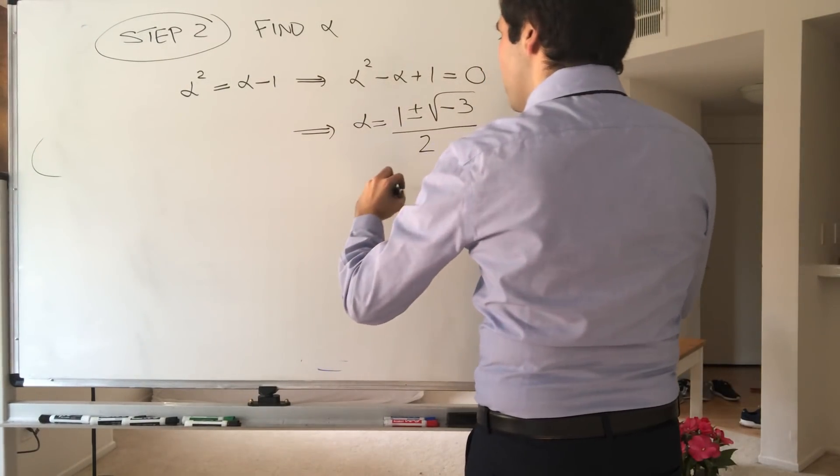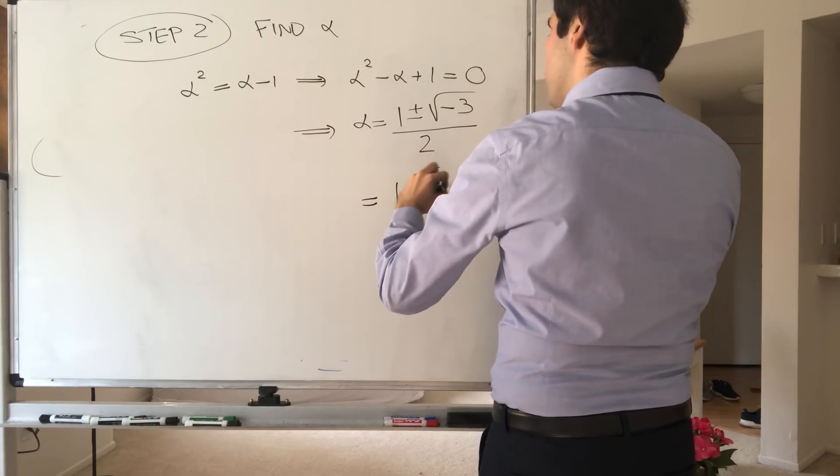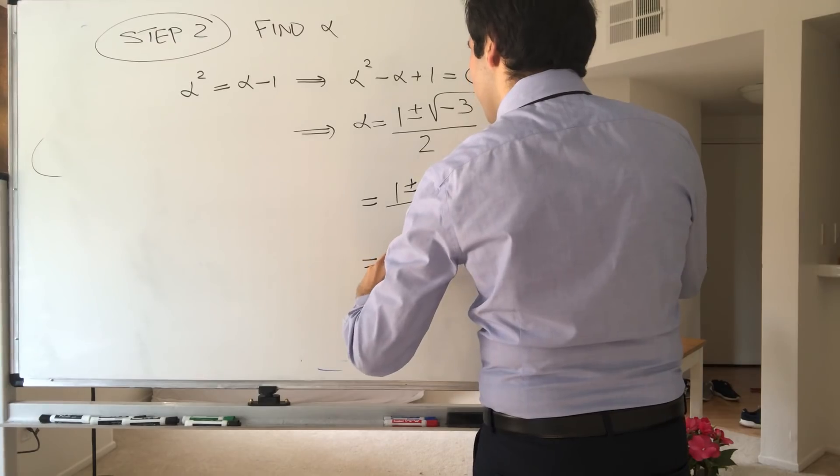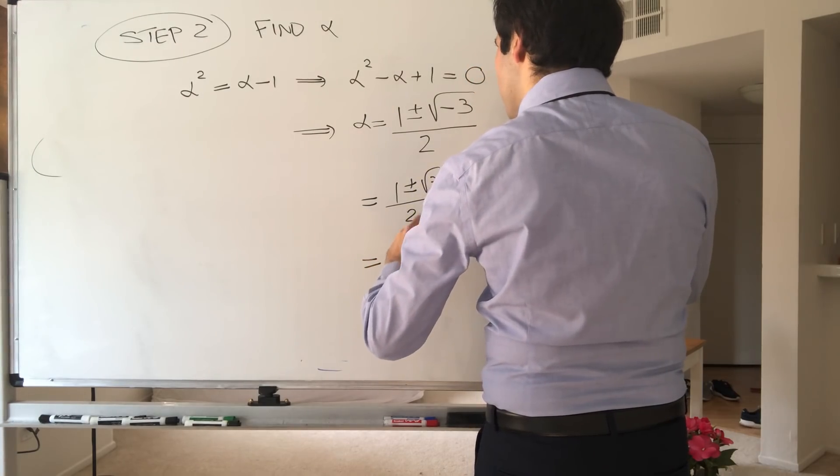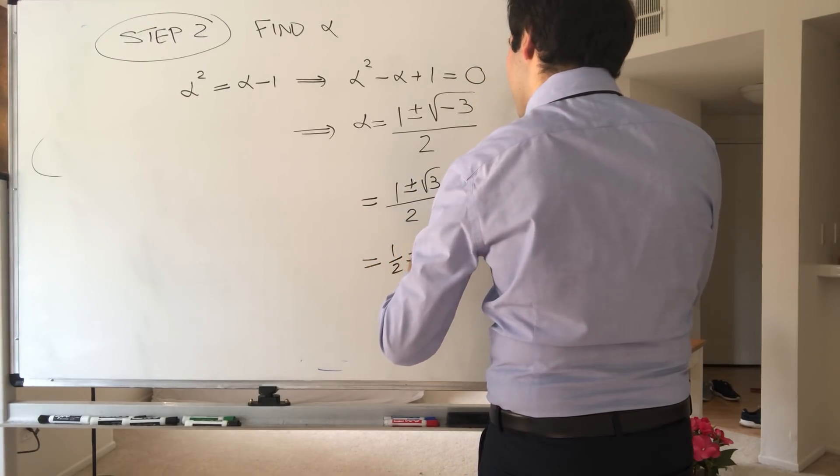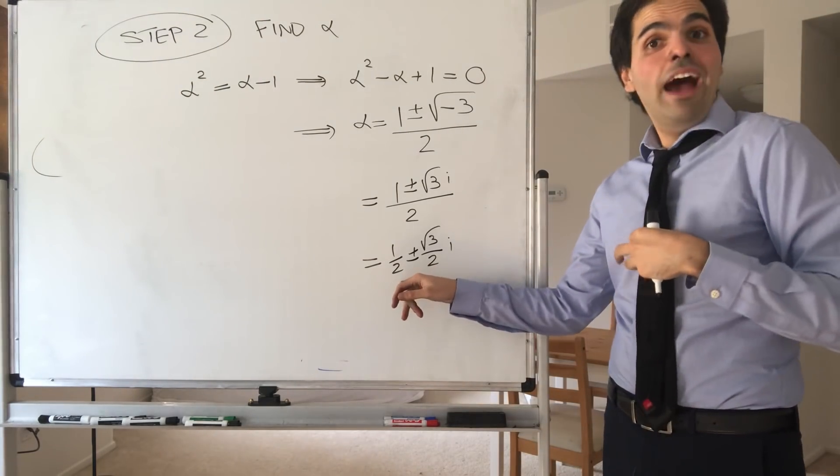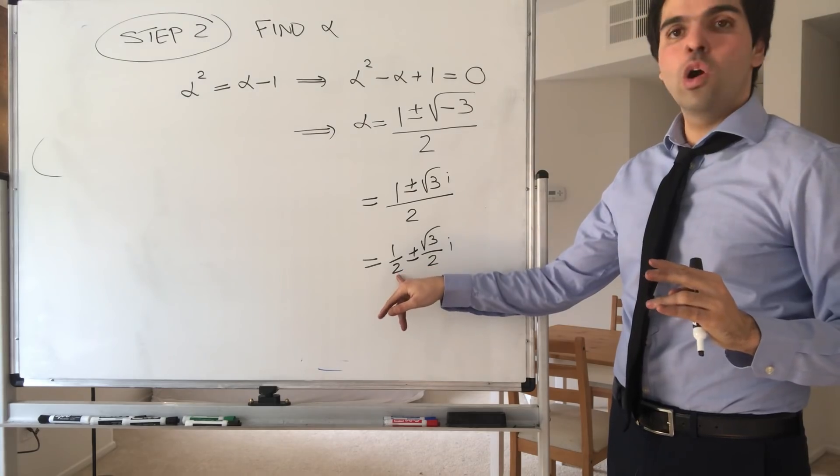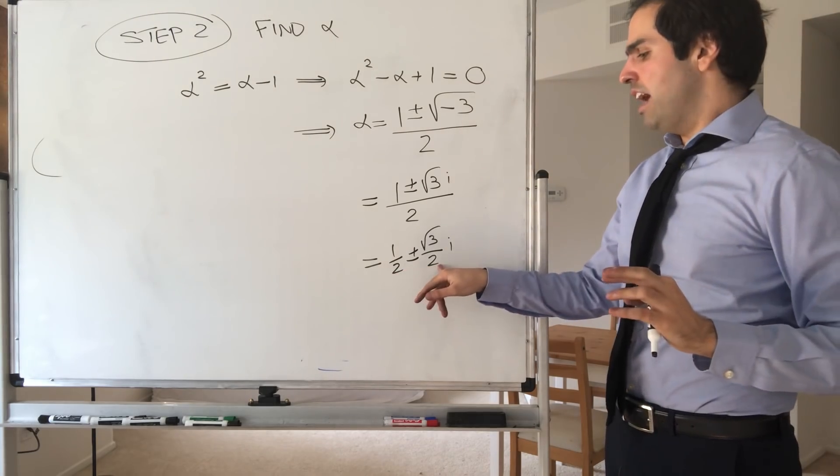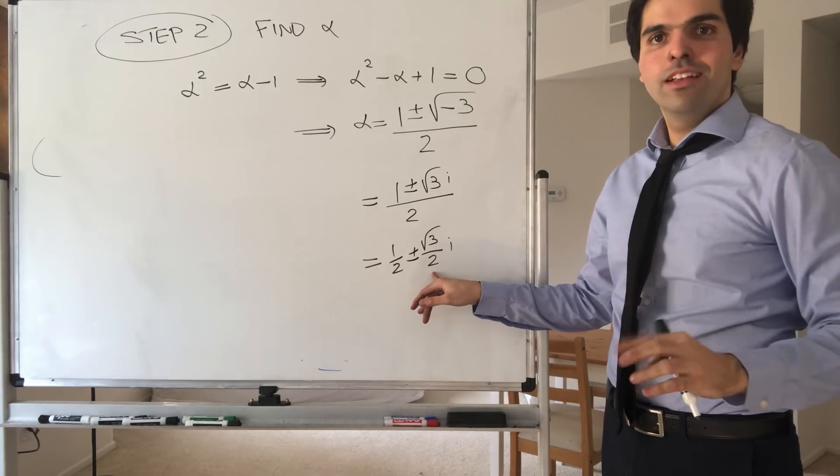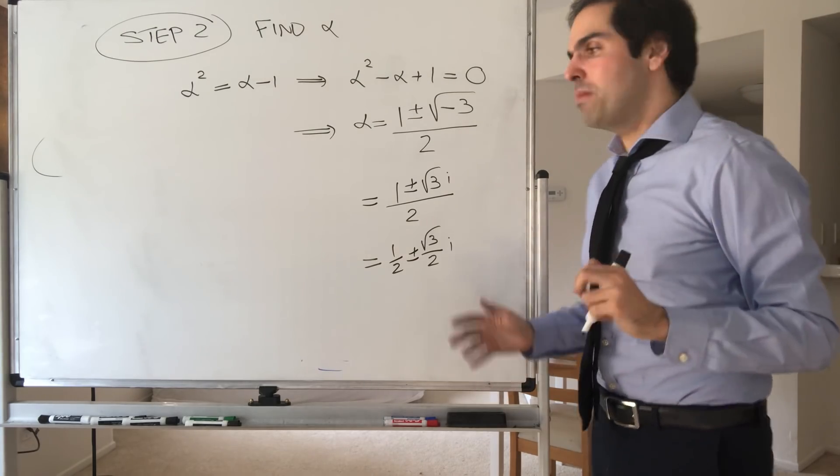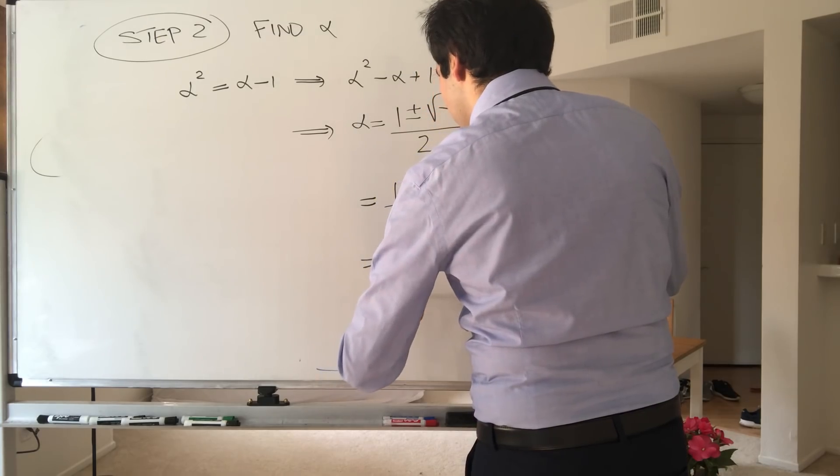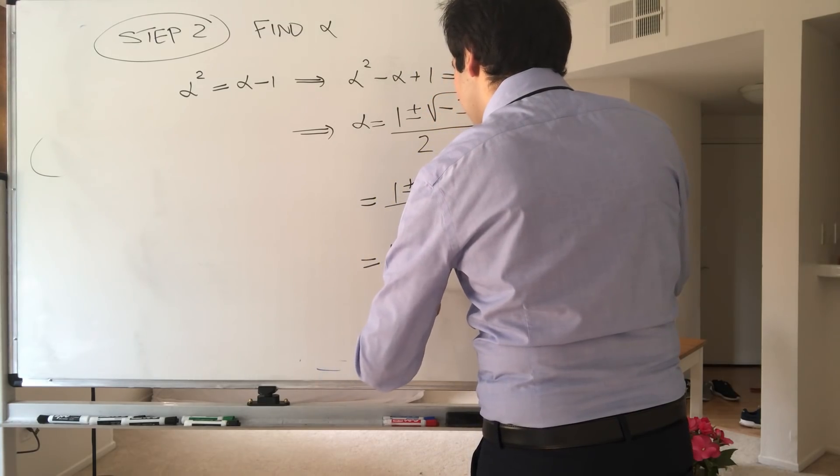And that becomes 1 plus or minus square root of 3i over 2. So 1 half plus or minus square root of 3 over 2i. Now, this might look very familiar for you from trig, because this is just cosine of pi over 3. And this is sine of pi over 3. So in fact, in terms of complex numbers, this is just either e to the i pi over 3, or e to the minus i pi over 3.